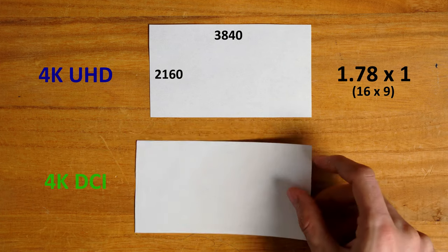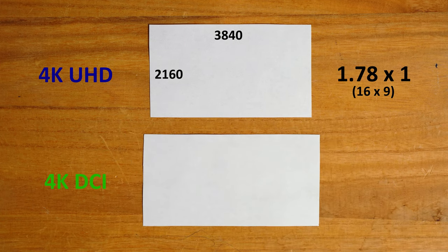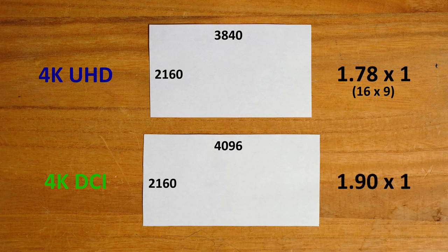Here is your 4K TCI. It has a resolution of 4096 by 2160, giving it an aspect ratio of 1.9 by 1. As you can see, it's wider than the 4K Ultra HD image.